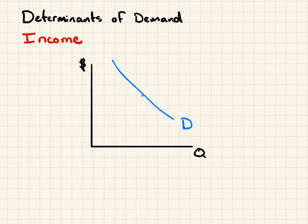And conversely, as your income goes down, your demand for various goods and services goes down. There's an exception to this though. This is normally how it works — we call these normal goods, or normal goods and services. When income goes up and we buy more, that's a normal good or service.